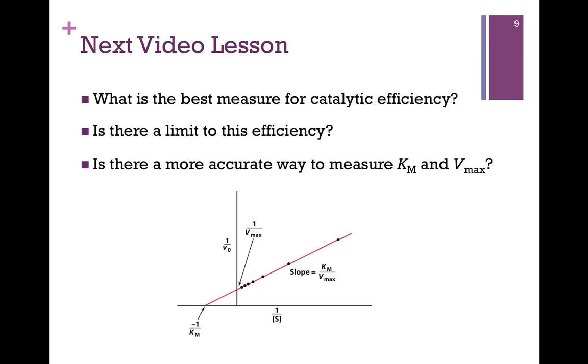So the question is, what's the best measure for catalytic efficiency? Is it Km or Vmax or some combination of the two? Is there a limit to that efficiency? And we want to find a more accurate way to measure Km and Vmax rather than just estimating them. We'll consider these things in our next lesson.